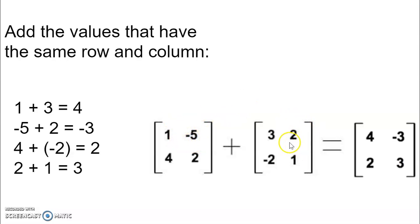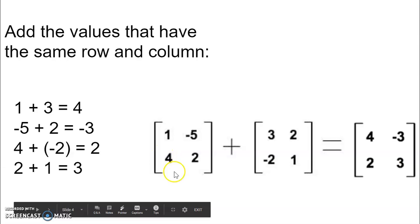So negative five and two, since it's row one, column two, they can both be added to be negative three, as seen here. And four is in row two, column one. And negative two is also in row two, column one.